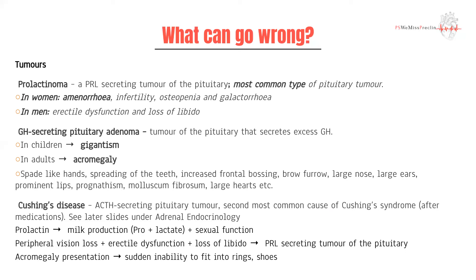Cushing's disease is caused by an ACTH-secreting pituitary tumor and is the second most common cause of Cushing's syndrome. We discuss Cushing's syndrome versus Cushing's disease in detail in our lecture on adrenal pathology, so have a look there if you're confused.